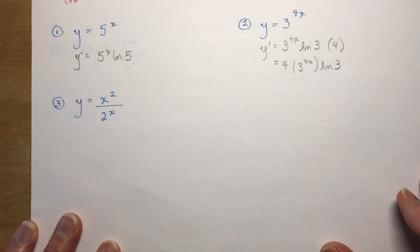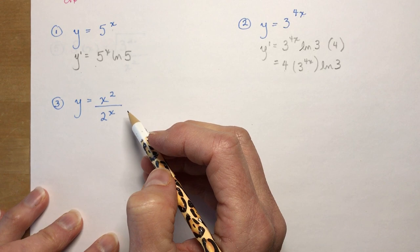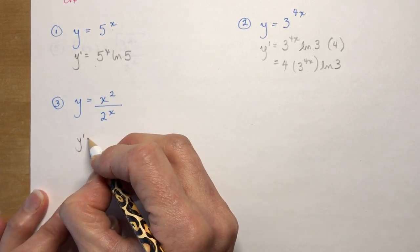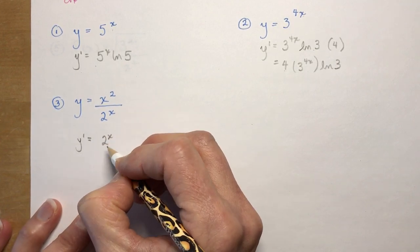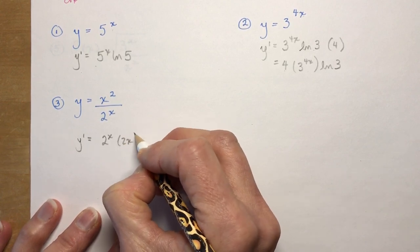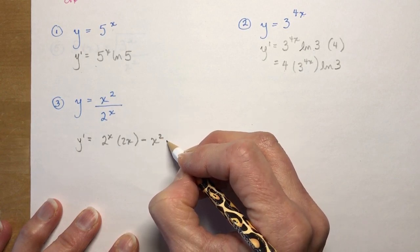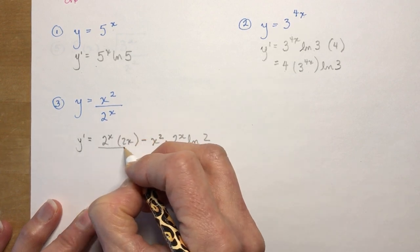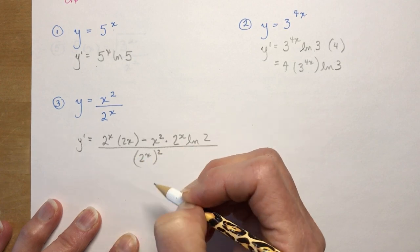Let's take a look at a quotient rule here. I have x squared over 2 to the x. We're going to do the ho-de-hi rule, also known as the quotient rule. So ho, which is the bottom, times the derivative of the top, so d-hi, ho d-hi 2x, minus high d-ho. So here we go. This is a new one. 2 to the x ln 2, all over ho squared.